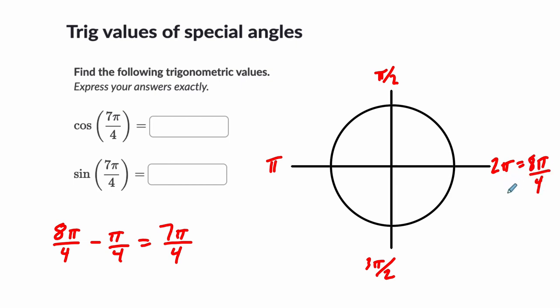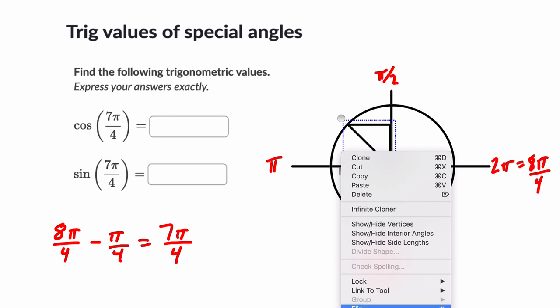2 pi is 8 pi over 4. Same thing, right? 8 divided by 4 is 2. So this is a fourth of pi less than a full rotation. That's what 7 pi over 4 is. So this is 45 degrees back from a full rotation. That's me trying to draw pi over 4 or 45 degrees. Let me grab my triangle tool. I'm going to draw the triangle in this region here, and then turn it around. So pi over 4, by the way, that's 45 degrees. So I'm going to turn it, and then I'm going to flip it.